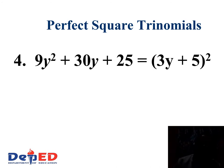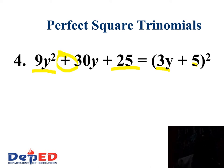Another example: we have 9y² as the first term and 25 as the third term, so we can say this is a perfect square trinomial. The square root of 9y² is 3y, and the square root of 25 is 5. The middle term is positive, so write positive here. So 3y times 5 is 15y, and twice of that is 30y as the middle term. Therefore, the factors are the binomial (3y plus 5).